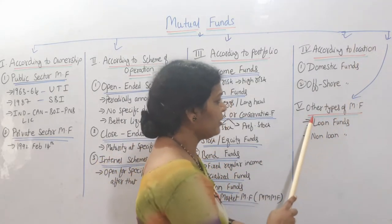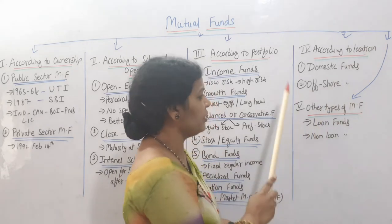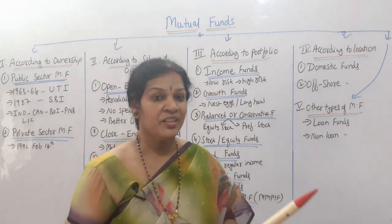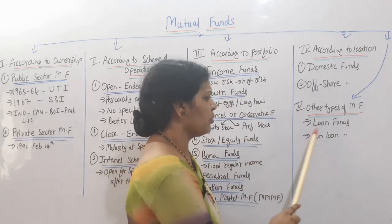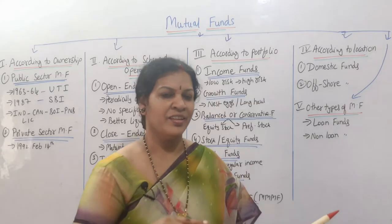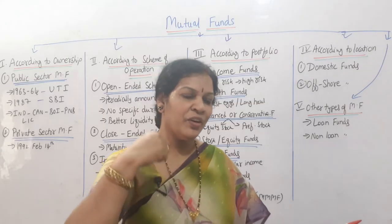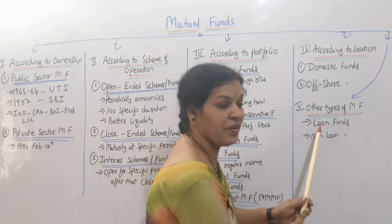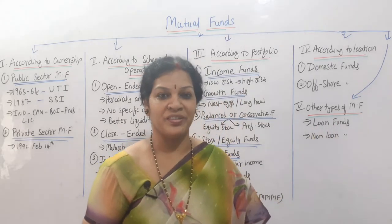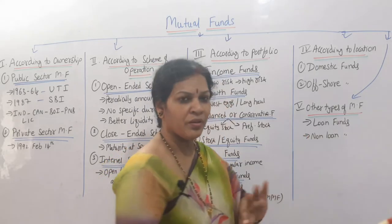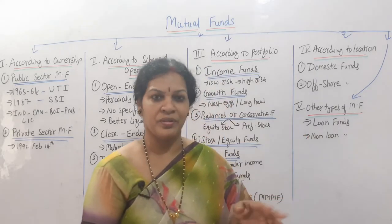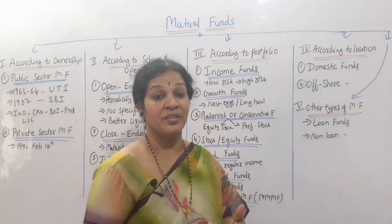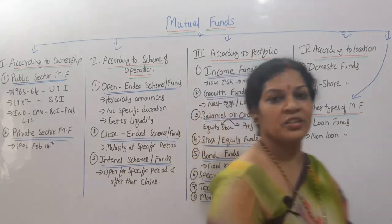The fifth category is other types of mutual funds — only two: loan funds and non-loan funds. If the funds are going to be utilized to issue loans, then it is called loan funds. If the funds are utilized for purposes other than loans, it is called non-loan funds. Please take a screenshot of this.